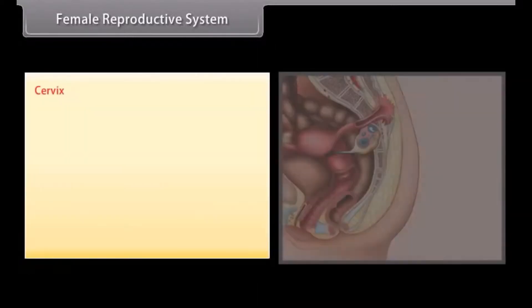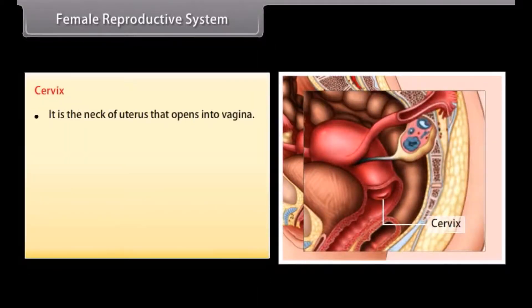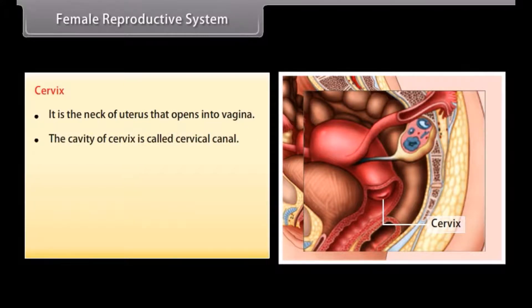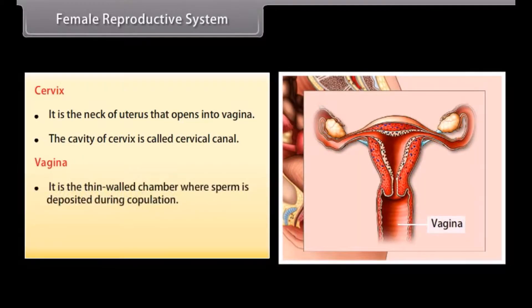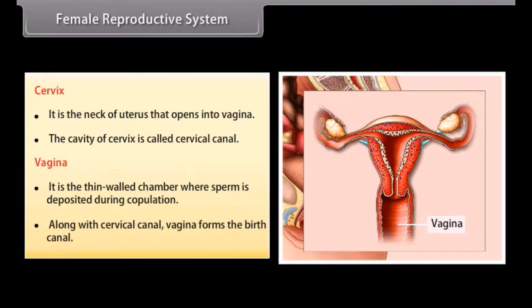The cervix is the neck of the uterus that opens into the vagina. The cavity of the cervix is called the cervical canal. The vagina is a thin-walled chamber where sperm is deposited during copulation. Together with the cervical canal, the vagina forms the birth canal.